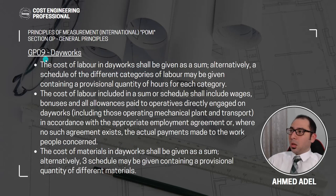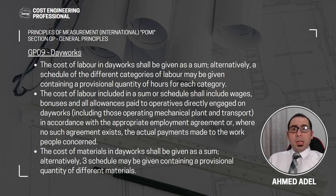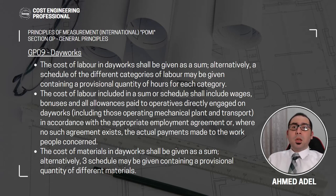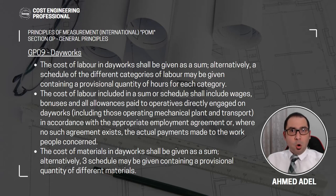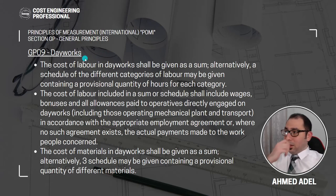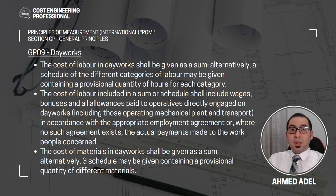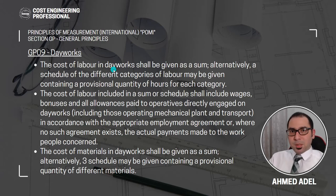Subsection 9 talks about day works. Day works is a schedule of rate-only items — labor and construction plant — that you keep at the end of your BOQ to finalize some variations or works not part of your original project scope. We keep rates for these items to use for that purpose. This section covers how to make the bill of day works and what these rates should include. The cost of labor in day works — such as unskilled labor, helper, mason, carpenter, plumber — shall be given as a sum.